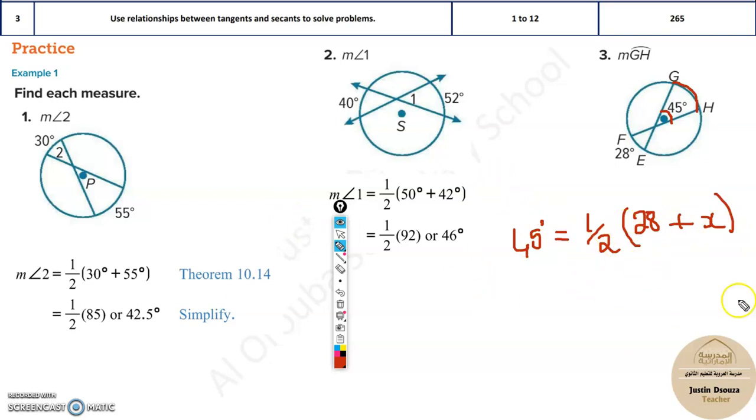Now if I solve this, I will get the answer. You can solve it directly in your calculator using equations, or what you can do is simplify this. Take 2 to the other side, it will become 90 equals 28 plus x. Now you need only x, so take 28 to the other side. It will be 90 minus 28, that is 62 equals x. So this particular arc is 62 degrees.